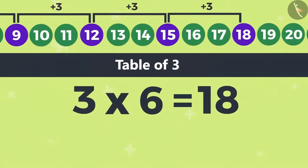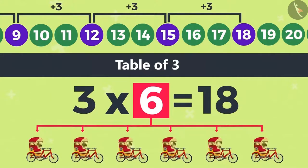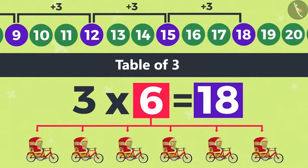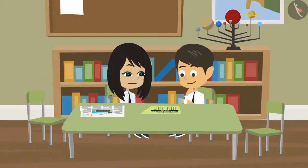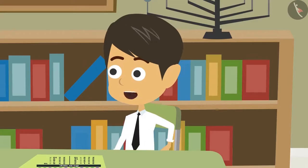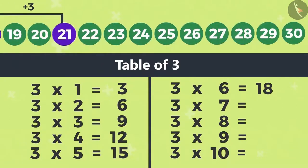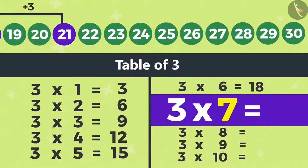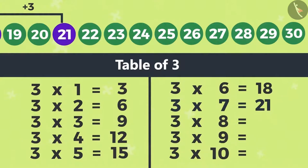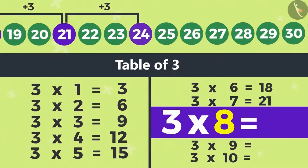See, we got to know that there will be 18 tires in 6 rickshaws. Yes, I got it. But now the Multiplication of 3 is not complete. We can complete that. The third number after 18 will be 21. That is 3 sevens are 21.